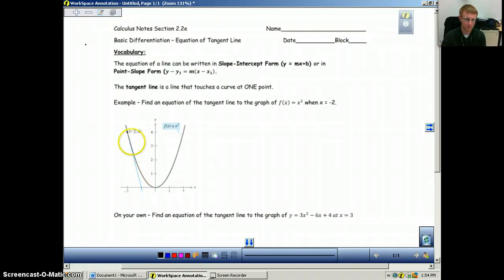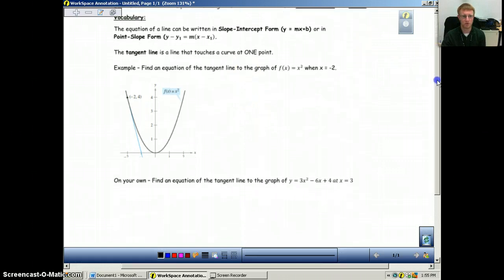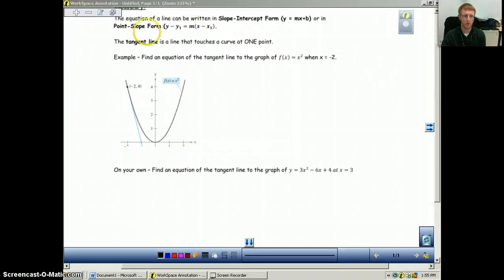So before, we talked about how to find the slope at this given value, say x equals negative 2. But what we haven't talked about is what's the actual equation of this tangent line. So really what it's getting into is we're talking about things that you've already learned before, which is using slope-intercept form and point-slope.